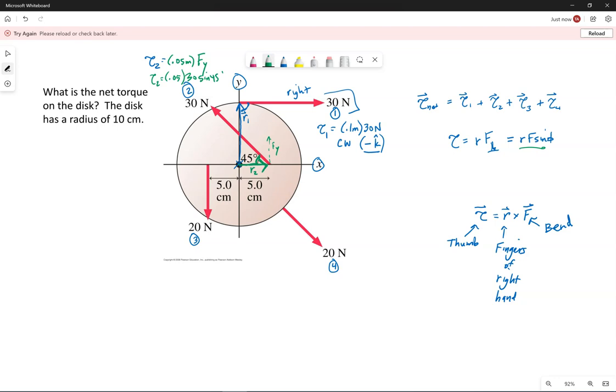Now this force would cause this disc to rotate counterclockwise. If I follow the same cross product rule I just mentioned, if we've put our fingers of our right hand pointing to the right and bend them in this direction, our thumb points out at us, that's the positive z direction.